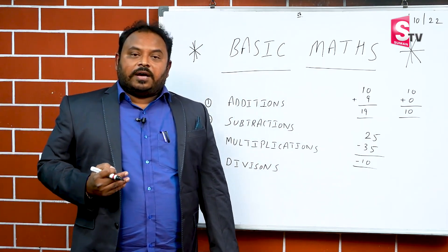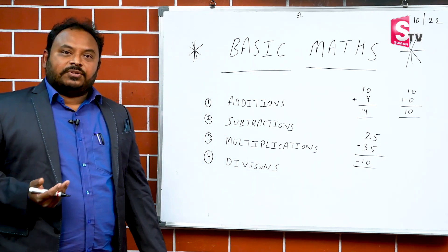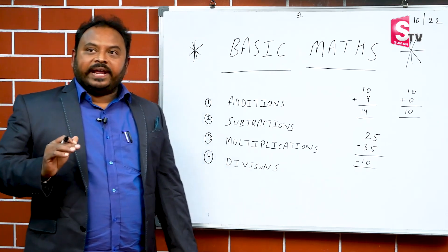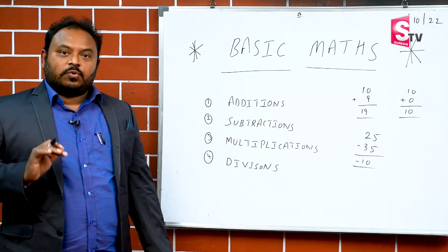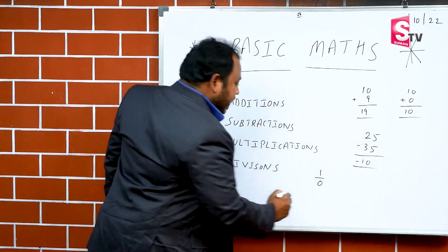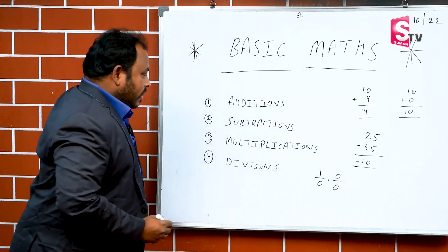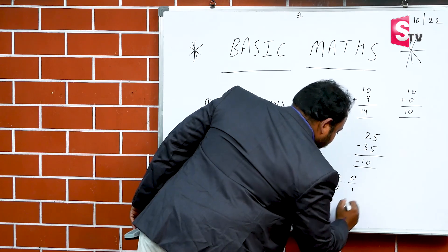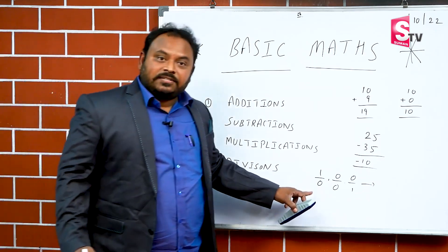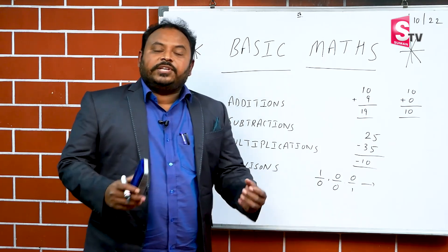If you ask an ICSE student who is in 10th class — this is ICSE, the best corporate school in Hyderabad, where they are paying at least 2 lakhs for the school — I asked one question: what is the value of 1 by 0, 0 by 0, and 0 by 1? I got the answer that all of them are 0 only.